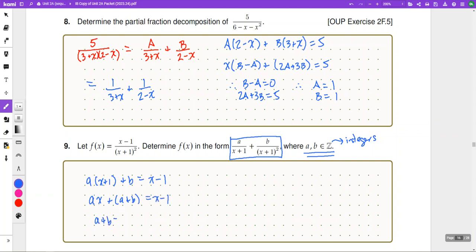So, a plus b must be equal to negative 1 and a must be equal to positive 1. And if a is equal to positive 1, that means that b must be equal to negative 2. Which means, then, that f of x can be written as 1 over x plus 1 minus 2 over the quantity x plus 1 squared.